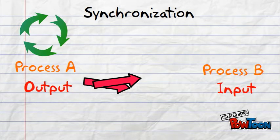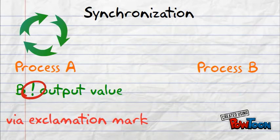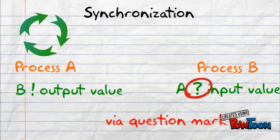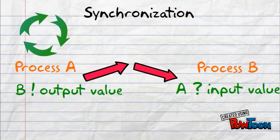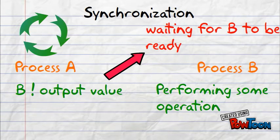It happens as described on the next slide. Process A states that it is ready to output to process B specifically, and process B states that it is ready to input from process A specifically. If one of these happens without the other being true, the process is put on an await queue until the other process is ready.